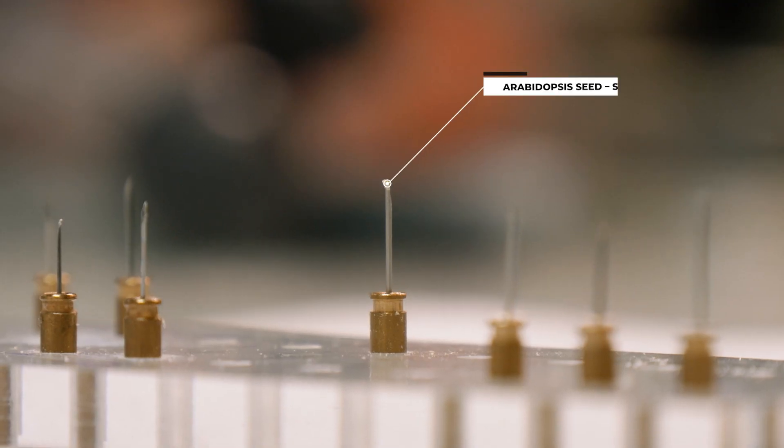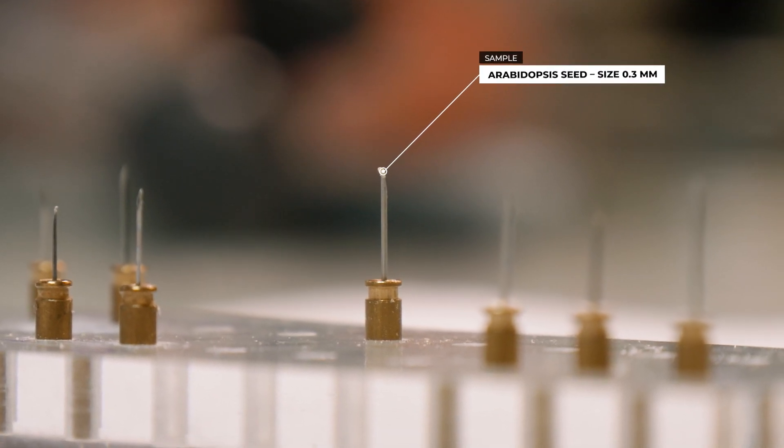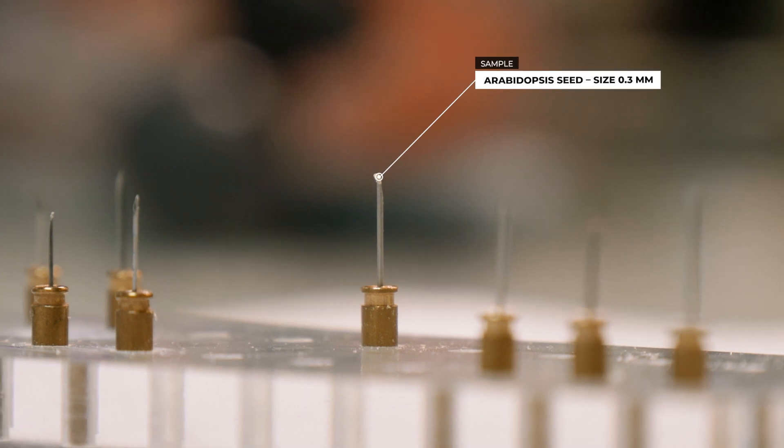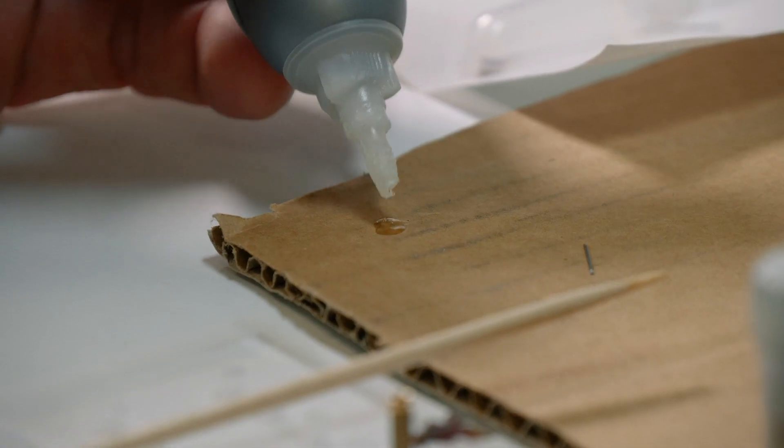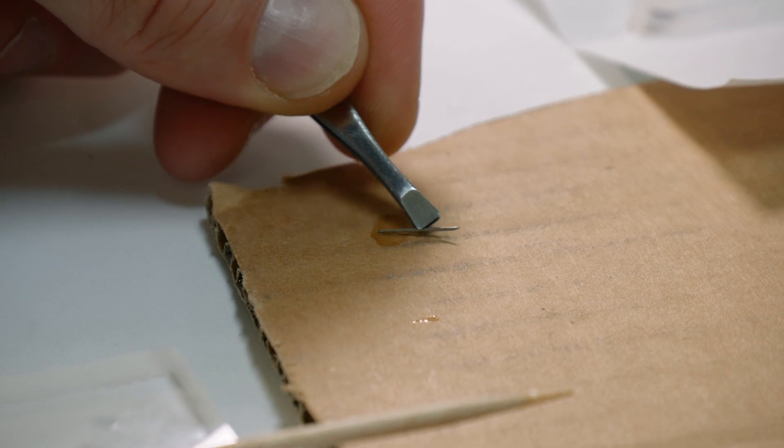For very small samples, like the seed shown here, we need a needle or syringe tip. We cut it to suitable length and glue it into the hole of the brass pin.